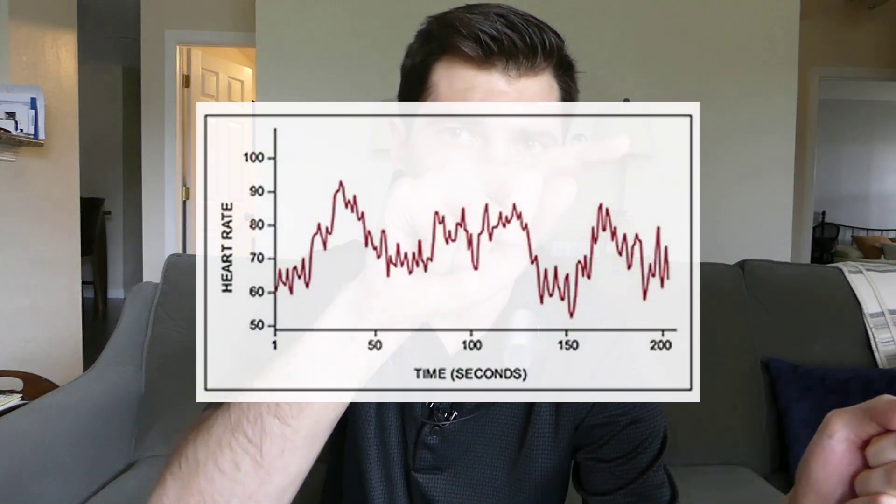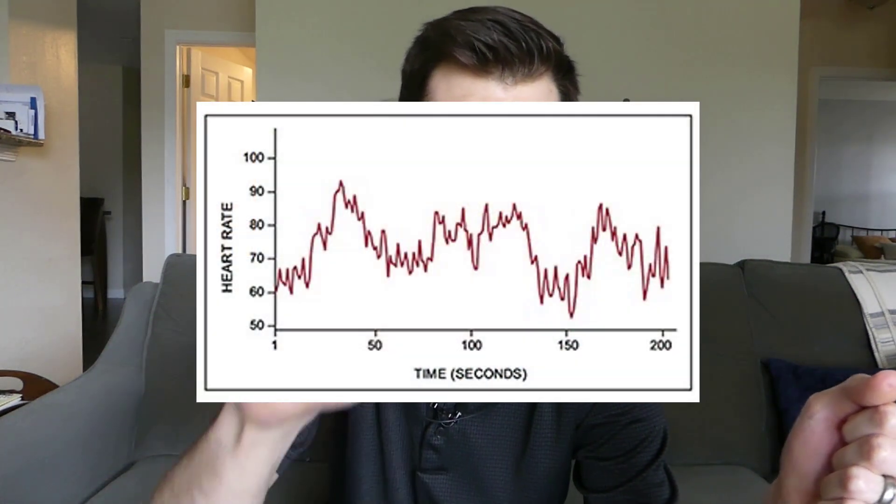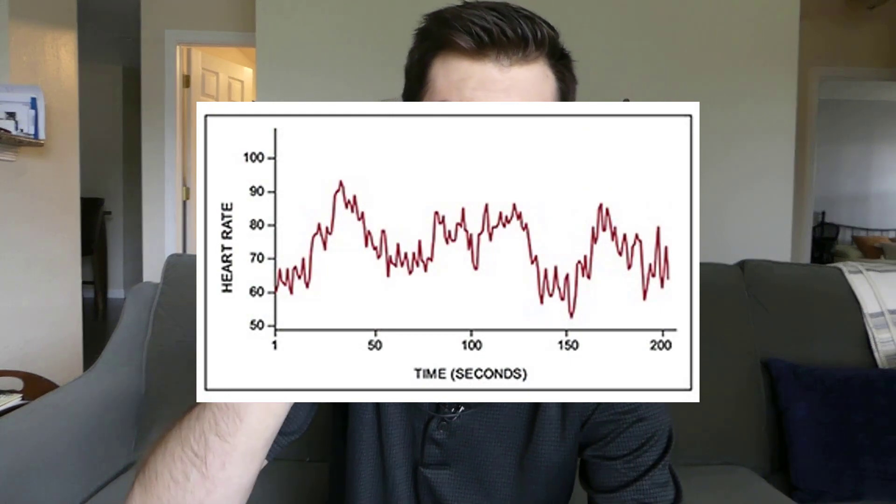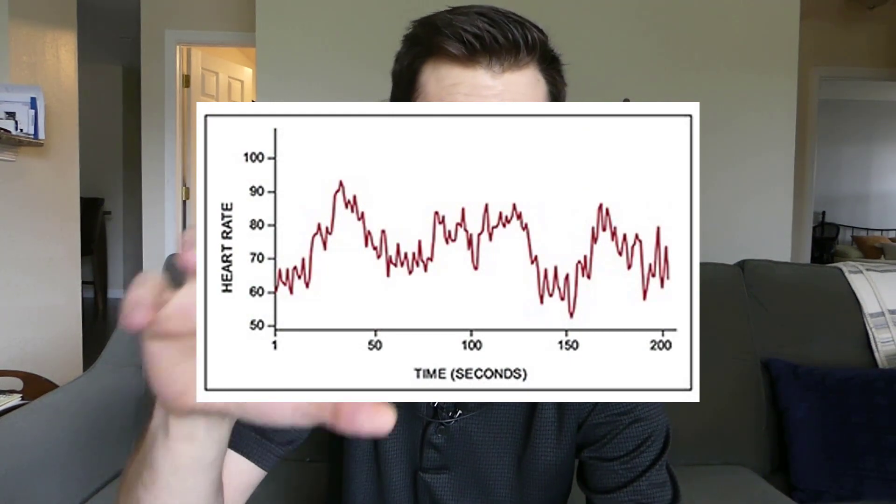This coherence score is based on how smooth and rhythmic your heart rate looks over time. The whole idea is that when you're really stressed, your heart rate is totally unpredictable. If you were to look at it on a graph, it's going to have all these sharp spikes, and it's going to look really jagged and totally unpredictable.